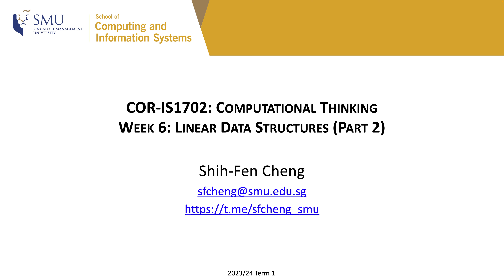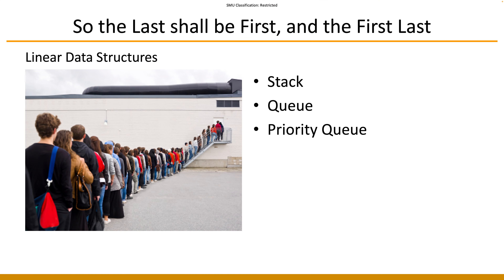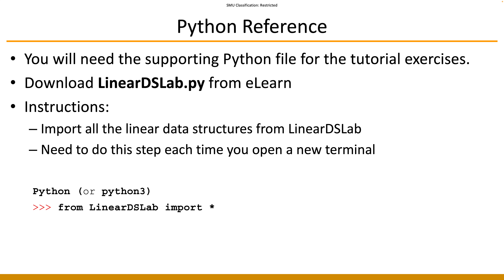Now we have a common understanding of how to introduce and define data structures. We are ready to look at the data structures for today. We are looking at mostly linear data structures this week — three different main types: the stack, the queue, and the priority queue, which is strictly speaking a special case of the queue. To use these data structures, you will need the file provided on the website to run tutorial exercises or write programs depending on the stack or queue definition, since they don't come with Python natively.